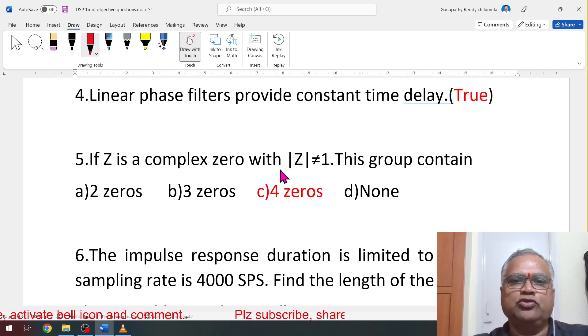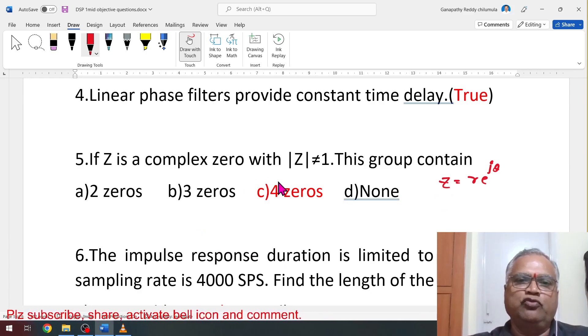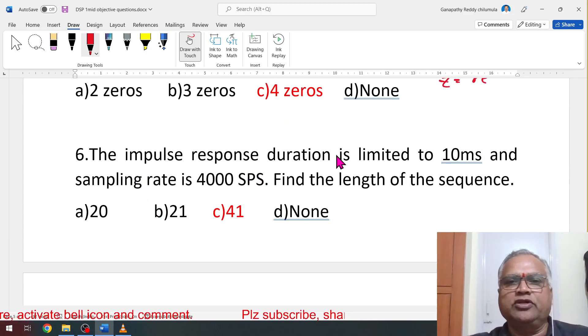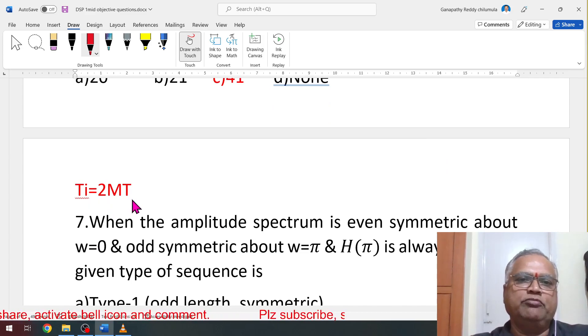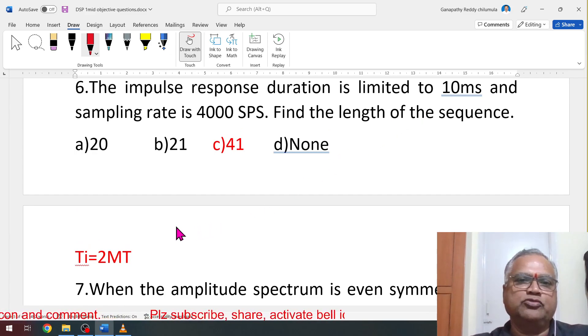If z is a complex zero with mod z not equal to 1, this group contains. Already discussed, if z is equal to Re^(jθ), there is a zero at 1/z, zero at z*, 1/z*. That will give 4 zeros. The impulse response duration is limited to 10 milliseconds and sampling rate is given 4000. Find length of the sequence. Do this formula: T_i equal to 2mt. What is T_i given? 10 milliseconds substitute. And in place of T, 1/4000, solve for m, m will be 20. And the number h(n) will be and capital N will be 2m+1. 2m+1, you will get 41.